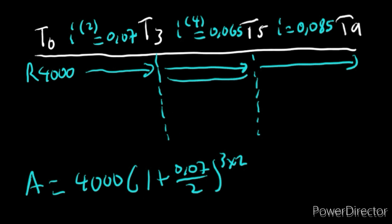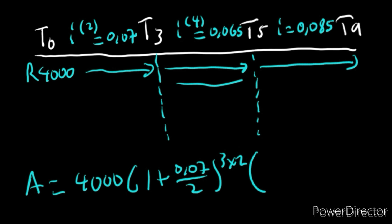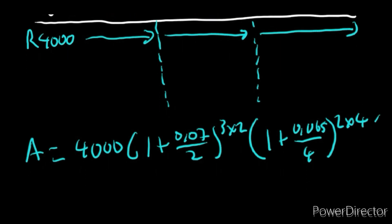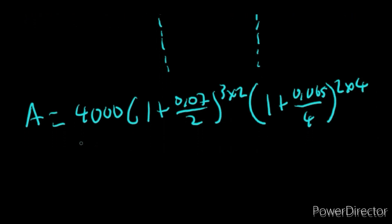For the second bracket, from T3 to T5 is two years. The interest rate was 6.5% per annum compounded quarterly, so we write (1 + 0.065/4)^(2×4). That covers this portion. Now for the last portion: from T5 to T9 is 4 years, since 9 minus 5 equals 4. The interest rate was 8.5% per annum effective, so we write (1 + 0.085)^4 — no need to divide since it's per annum.